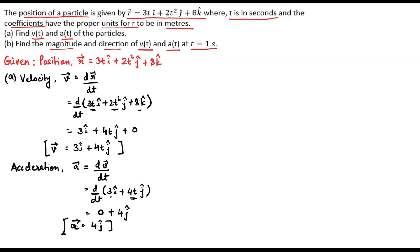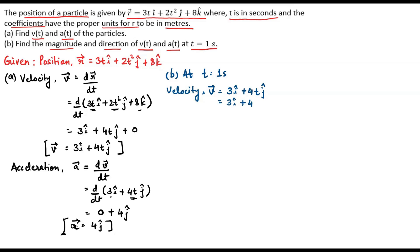Now move to part b. For part b we need to find the magnitude and direction of velocity and acceleration at time t equals 1 second. As we already calculated, velocity is v vector equal to 3i cap plus 4t j cap. Putting t equal to 1 second, we get velocity equal to 3i cap plus 4j cap.